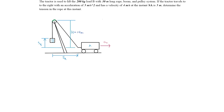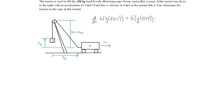In general, let's say we want to take the derivative of a composite function with respect to x. The first thing we do is take the derivative of the outside function, which is going to be h prime. Then we leave the inside function alone — that's g of f of x — and multiply by the derivative of the inside function, which is g prime of f of x. Since g is also a composite function, we also multiply by f prime of x.